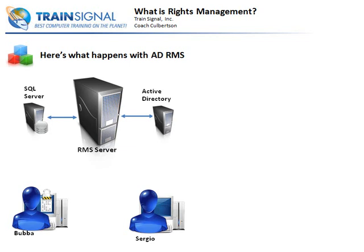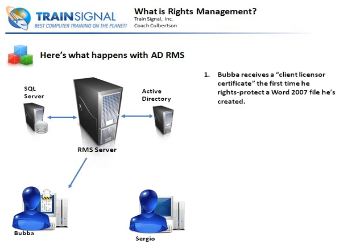Let's take a look at a quick example. Let's say that Bubba creates a Word document, and Bubba wants to make sure that only Sergio can actually see this particular document and do anything with it. What Bubba is going to do is use Word 2007, and he's going to receive a client licensor certificate from the rights management server the first time he actually protects this document.